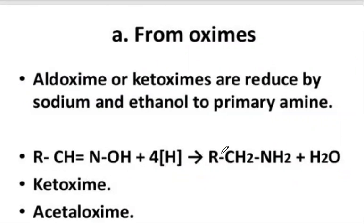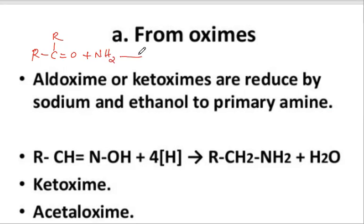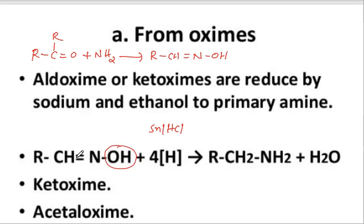Let's discuss preparation of amines from oximes. What are oximes? When a ketone reacts with ammonia (hydroxylamine, NH2OH), it produces an oxime (C=N-OH). When this oxime is reduced using a reducing agent such as tin and HCl, iron and HCl, or similar agents, the OH group is replaced with a hydrogen atom through the reduction of the double bond.